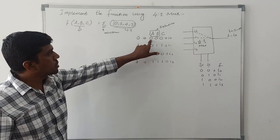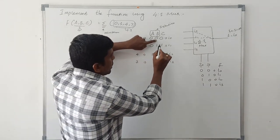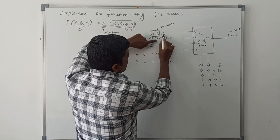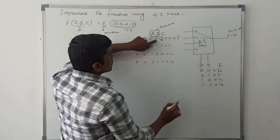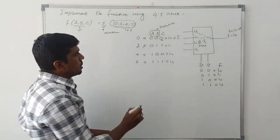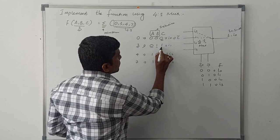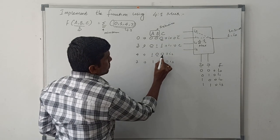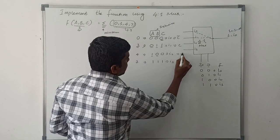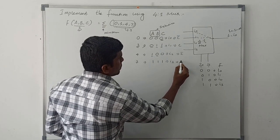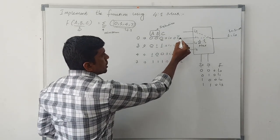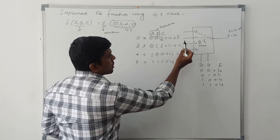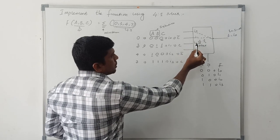When A=0, B=0: the C value in the minterm is 0, so I0 = C'. When A=0, B=1: the C value is 1, so I1 = C. When A=1, B=0: the C value is 0, so I2 = C'. When A=1, B=1: the C value is 1, so I3 = C. These 4 signals are the input signals connected to I0, I1, I2, I3, and based on selection lines A and B, the input value is connected to the output.